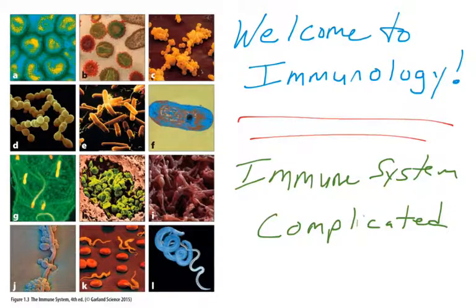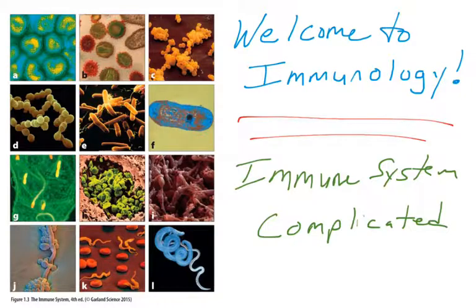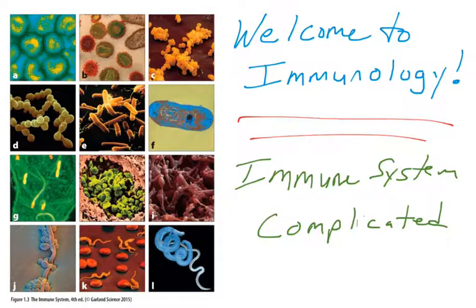It has to do with all the different pathogens that could infect a person, all the different locations that the pathogens could be located in. So the immune system has to do a good job of patrolling, protecting, defending, attacking, communicating against all these different types of pathogens, pathogens that the body has never seen before. So the immune system is complex, but I'm very confident that you'll be able to learn about all the complexities of the immune system.